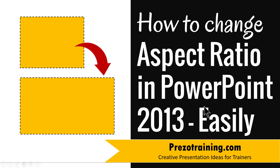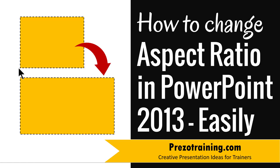You might be aware that there are two common slide sizes in PowerPoint. One is the standard 4:3 slide aspect ratio and the second is 16:9. If you had been using PowerPoint 2010 or earlier versions, your slides would be in 4:3. However, from PowerPoint 2013 onwards, the default slide aspect ratio is 16:9.